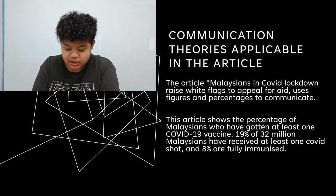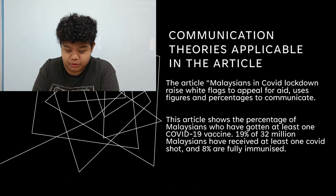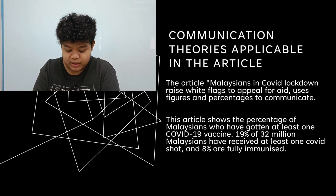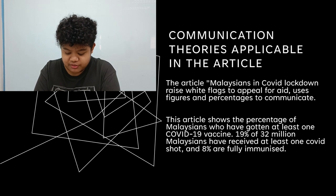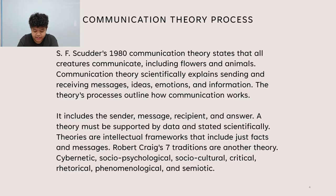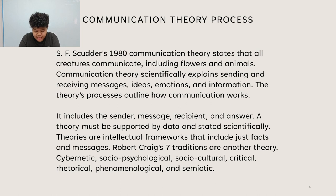The article, 'Malaysians in COVID lockdown raise white flags to call for aid,' uses figures and percentages to communicate. This article shows the percentage of Malaysians who have gotten at least one COVID-19 vaccine. Specifically, 19% of 32 million Malaysians have received at least one COVID shot, and 8% are fully immunized. SF Schuder's 1980 communication theory states that all creatures communicate, including flowers and animals. Communication theory scientifically explains the sending and receiving of messages, ideas, emotions, and information.